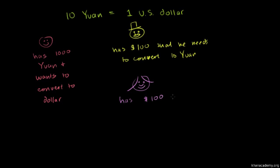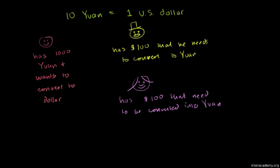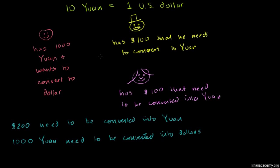Let's say this person has $100 that he needs to convert to won — maybe he wants to buy some Chinese goods, or maybe he's a Chinese factory owner who sold goods in the US and needs to convert back to won to pay his employees. And let's say there's another person who also has $100 that needs to be converted into won. So the total market demand: $200 needs to be converted into won, and on the other side, 1,000 won needs to be converted into dollars.